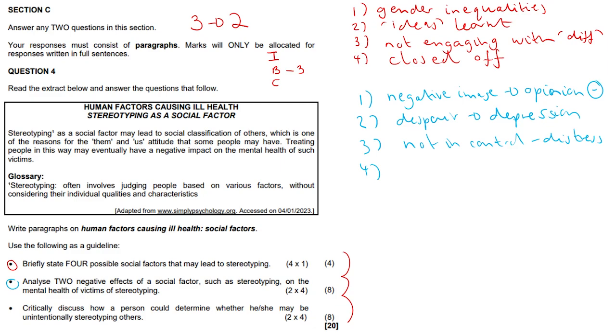They begin to believe the negative descriptions about themselves and they easily give in to bullying and harassment at work. So they believe all this nonsense that people are spewing or the media is spewing, and they just become more susceptible to even worse things. Last four here: critically discuss how a person could determine whether he or she may be unintentionally stereotyping others.